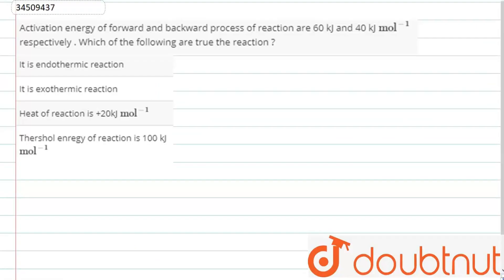This question has been asked: the activation energy of a forward and backward reaction are 60 kJ per mole and 40 kJ per mole. So which of the following statements are true for the given reaction?